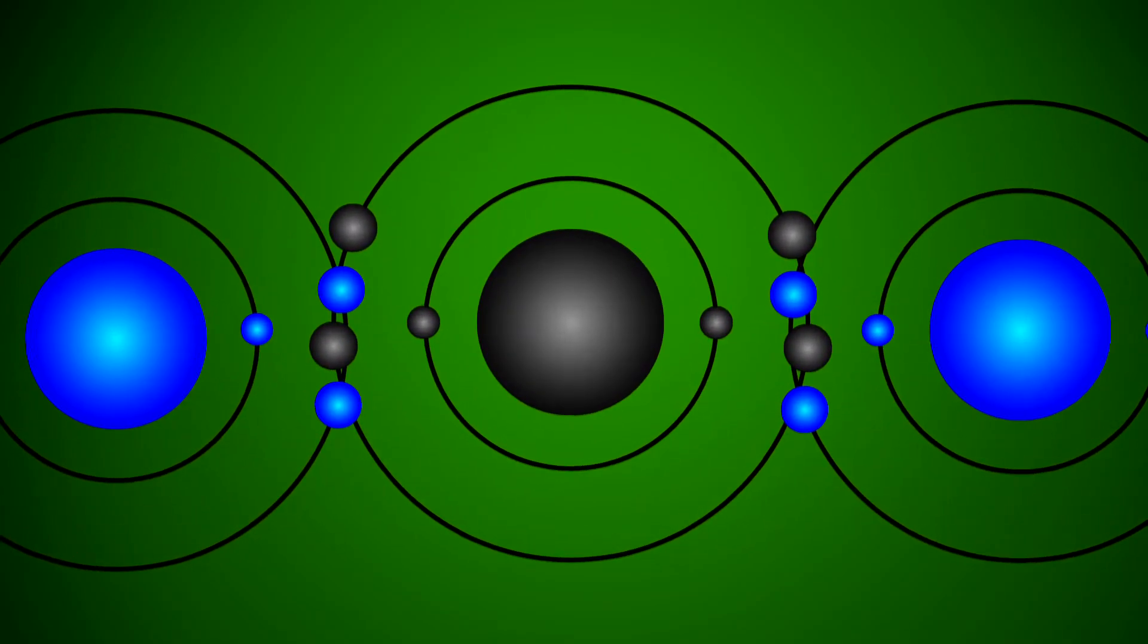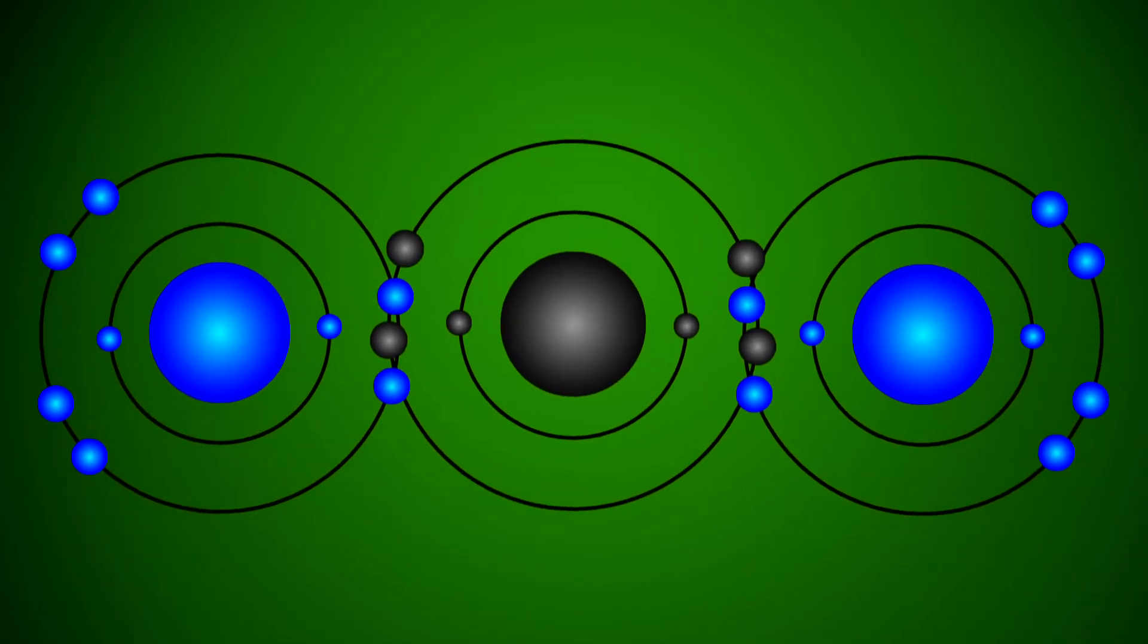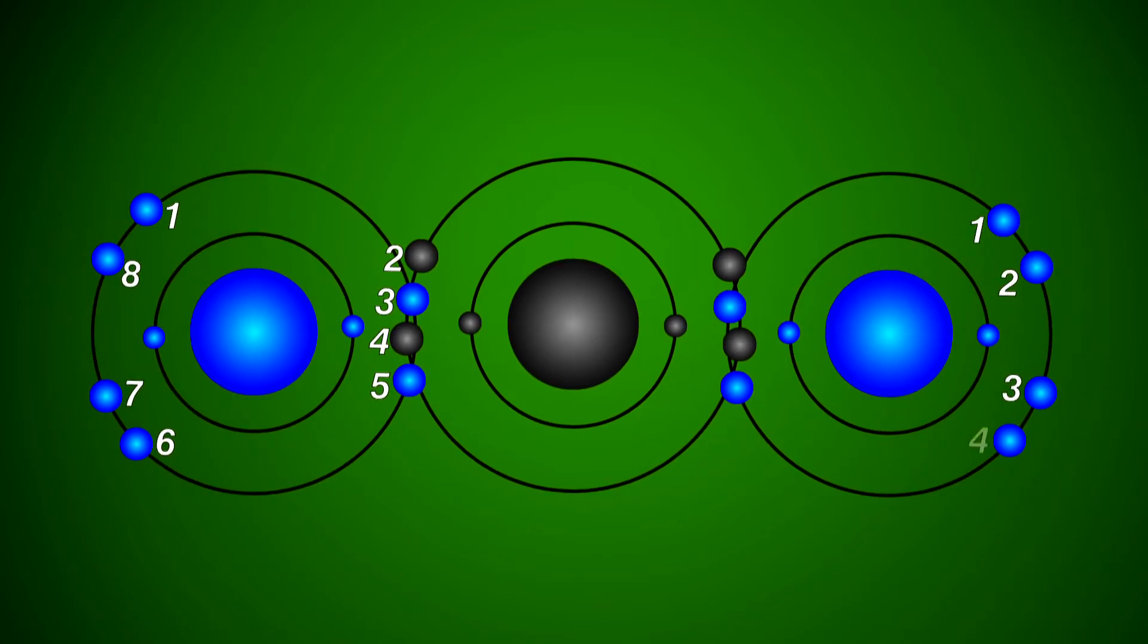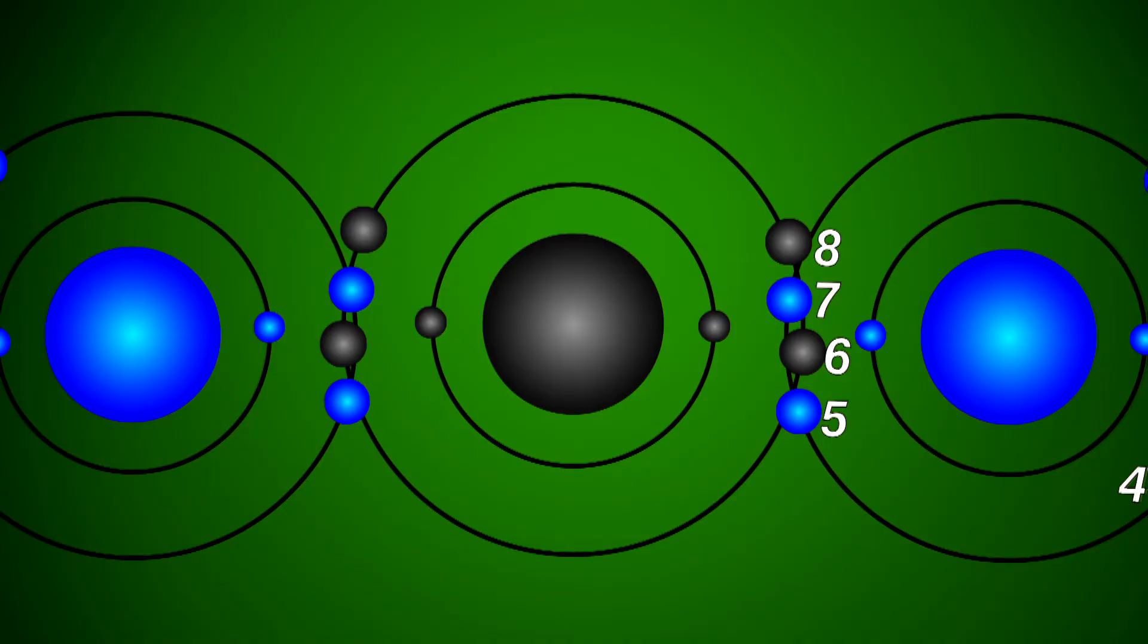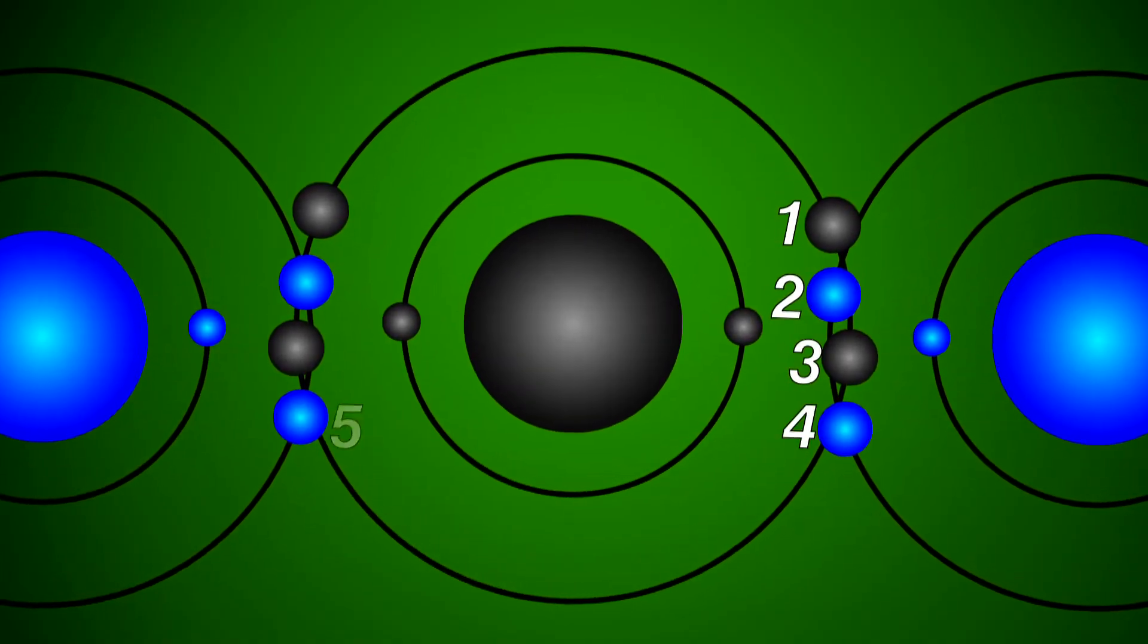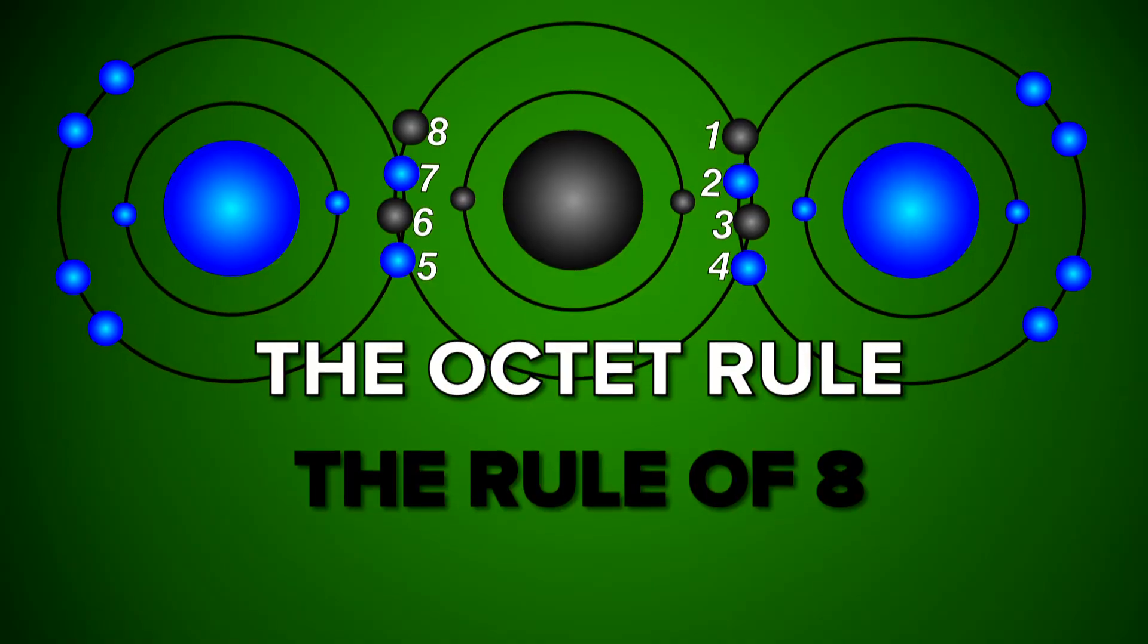It's a little like an atomic version of the card game, go fish. Each one wants to let go of, or pick up, enough electrons, so it ends up with a particular number of electrons in its outermost shell. Very often, a total of eight. This is so common, it's called the octet rule, or rule of eight.